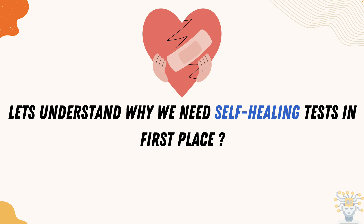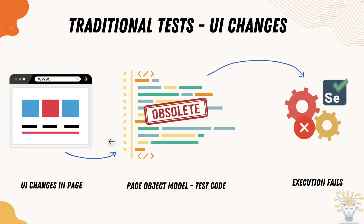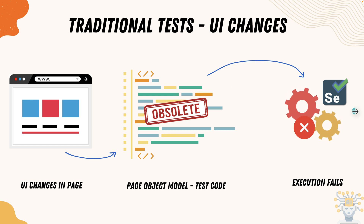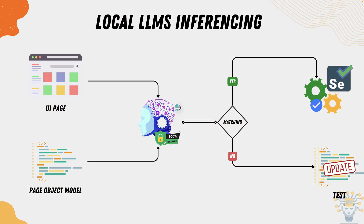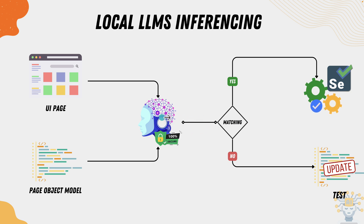Let's understand why we need self-healing tests. For instance, you have a page developed by developers and they've made some changes on the UI — now our test gets obsolete and immediately fails. But what if we pass the page as well as the code to the large language model, and we get a real-time feed of what has changed on the page, plus whether our page object model code has any obsolete locators? Then we can ask the LLM to return any matching page locator and run it. If there is a breaking change, report that breaking change as a file and still don't fail the test.